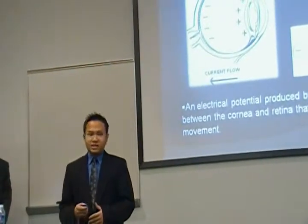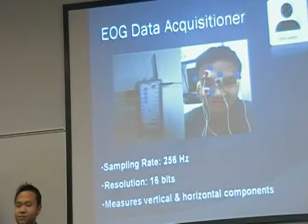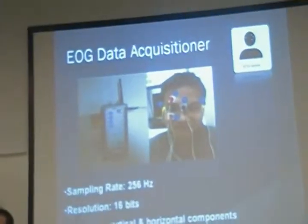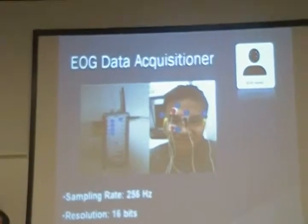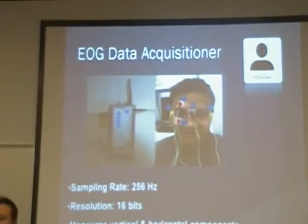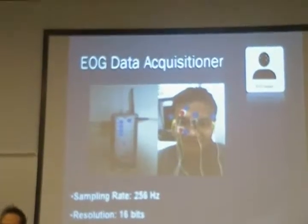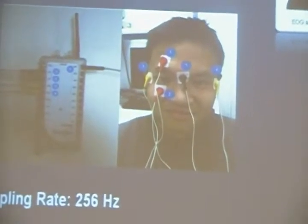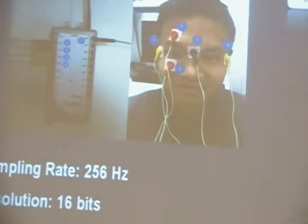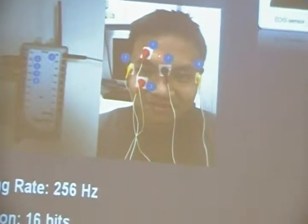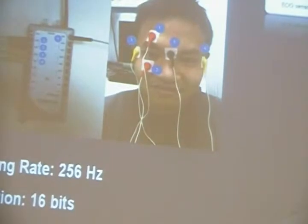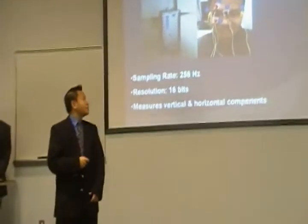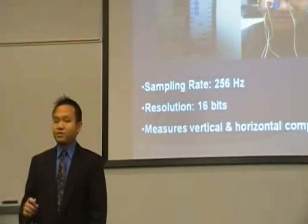How do we capture this EOG signal? The best way is by attaching electrodes to the surface of the user. In the project, we use a biopotential acquisition device called the bioradio, utilizing two channels. One channel is responsible for the vertical movement of the eyes, and the other for horizontal movement. The red electrodes are placed above and below the eyes to measure vertical movement, and the yellow electrodes are placed on both sides of the eyes to measure horizontal movement.